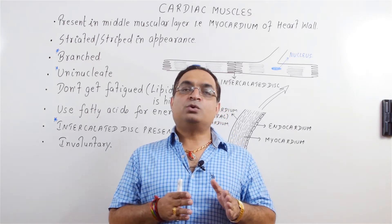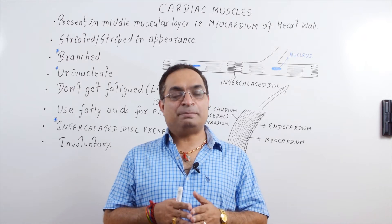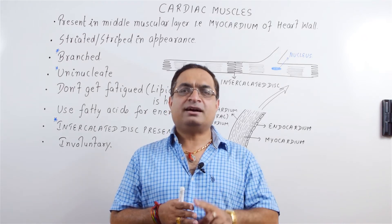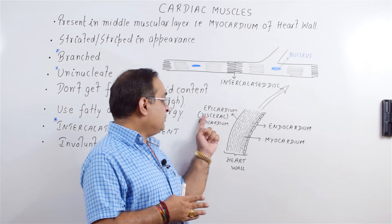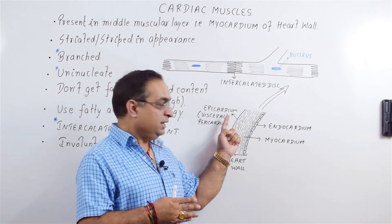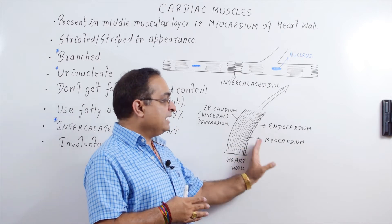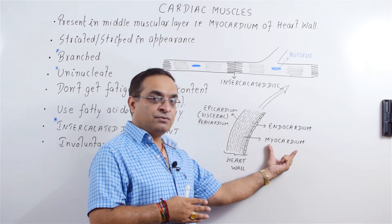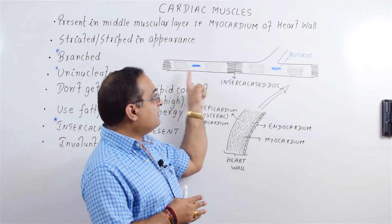Pericardium consists of an outer fibrous pericardium and an inner serous pericardium. The serous pericardium further has two layers — the inner visceral pericardium, which is called epicardium. So this is the heart wall, and as I said, myocardium is the thickest layer of the heart wall. This myocardium has cardiac muscles.